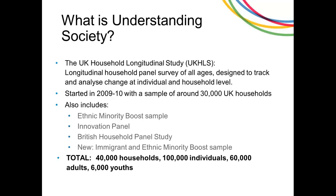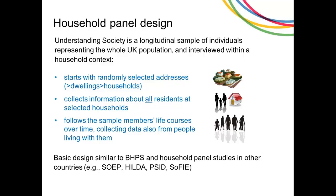The special sub-samples include an ethnic minority boost sample covering the five main ethnic minority groups of the UK, an innovation panel for methodological research, and the British Household Panel Study — the predecessor of Understanding Society, which ran from 1991 to 2008 and has been fully incorporated. In 2015 an immigrant and ethnic minority boost sample was added, bringing the total to around 40,000 households.